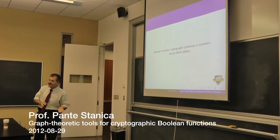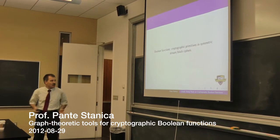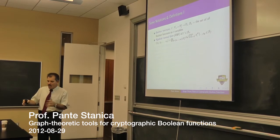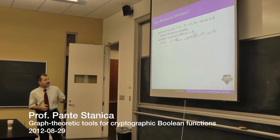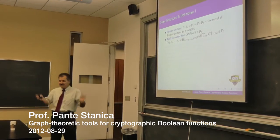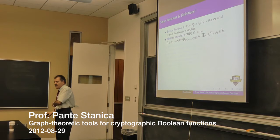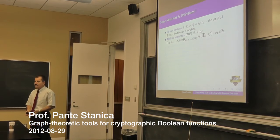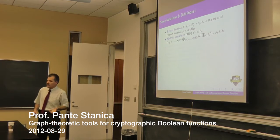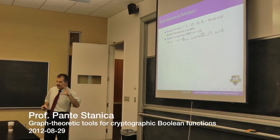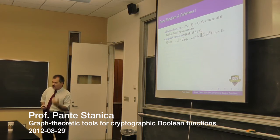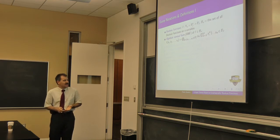I'm also interested in public key, but that's for a different talk. A Boolean function is simply a function defined on a vector space of dimension n over the binary field, with values into the binary field or a vector space over the binary field — those are called multi-output Boolean functions. I'm going to speak about the simpler case: unidimensional Boolean functions.